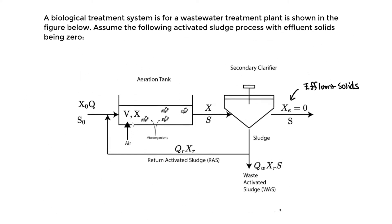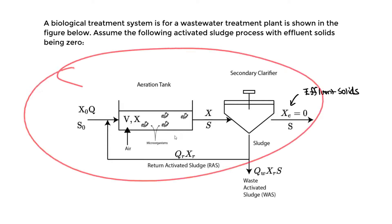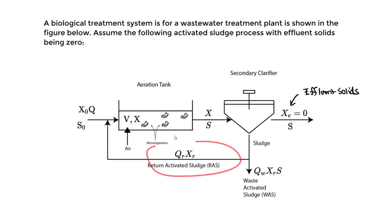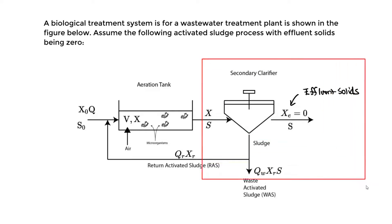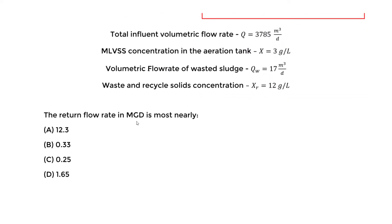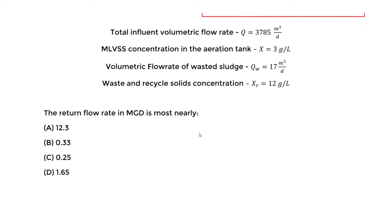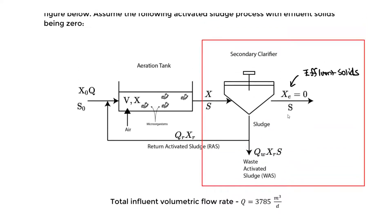To solve this, I propose doing a mass balance. We need to decide which system to isolate. We could do the overall system, but since we're looking at the return activated sludge, which is mainly concerned with the secondary clarifier, we're going to isolate just the secondary clarifier and apply a mass balance to it, with the end goal of finding Q sub R, the recycle flow rate.